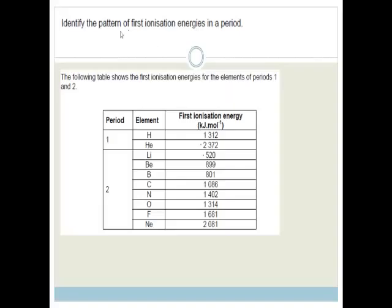The first question says, identify the pattern of the first ionization energies in a period. Oh, that's pretty easy. As you go across the period, the ionization energies increase. So, as you go across the period, the first ionization energies increase. I'm just doing it so that you don't have to watch me write out slowly. You write it out properly.